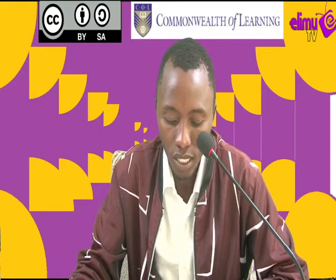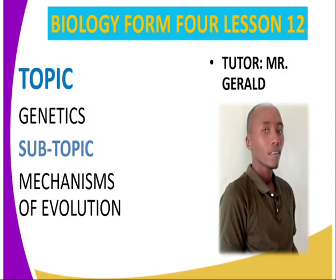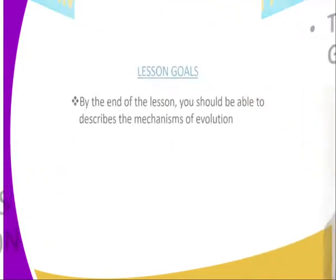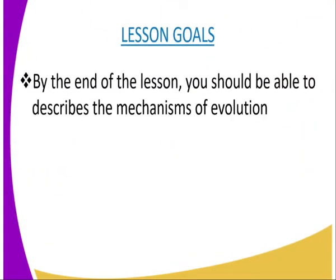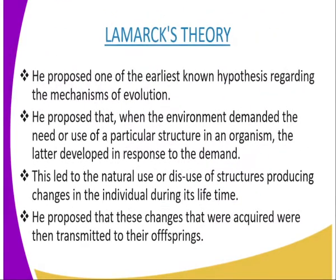Several theories have been formulated to explain how evolution may have occurred. Among these theories are those proposed by Jean-Baptiste Lamarck in 1809 and Charles Darwin in the year 1859. By the end of the lesson, you should be able to describe the mechanisms of evolution.